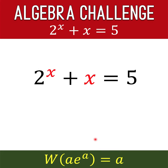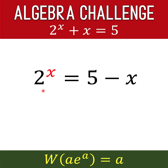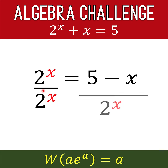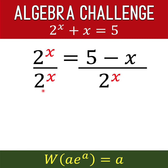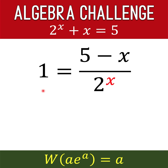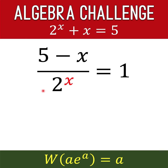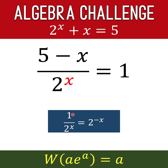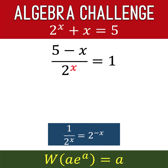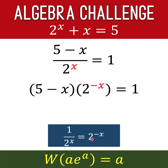We want to transform this into the form a times e raised to a. Let's begin by isolating the exponential expression — the left side is exponential and the right side is linear. We divide both sides of the equation by 2 raised to x. The left side becomes 1 and the right side is just copied. Then we interchange the left and right sides by the symmetric property of equality. We can write the quotient as a product, noting that 1 over 2 raised to x equals 2 raised to negative x. Therefore the left side becomes the quantity 5 minus x times 2 raised to negative x.